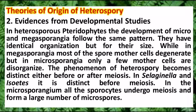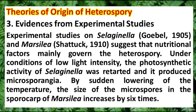From developmental studies, microspores and megaspores follow the same pattern and have identical organization but for their size. In megasporangia, most of the mother cells degenerate, but in microsporangia all spore mother cells develop into microspores, so the megaspores that do develop are larger in size. Regarding experimental studies, Giebel in 1905 and Stackert in 1910 observed that nutritional factors mainly govern heterospory. Under conditions of low light intensity, the photosynthetic activity of Selaginella was retarded and gave rise to the formation of only microsporangia.